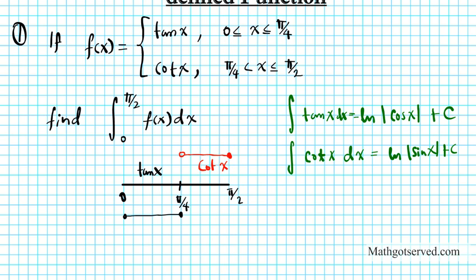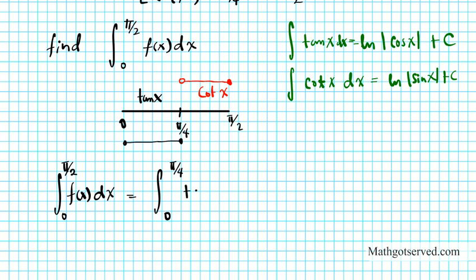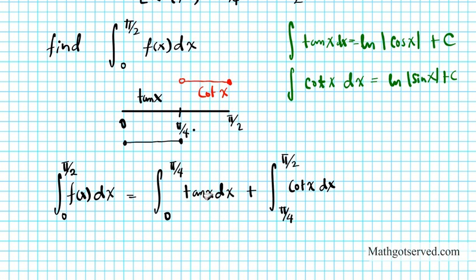So how do we set up this integral? We use the function that's active on each interval. The definite integral of f of x dx from 0 to pi over 2 is simply the integral from 0 to pi over 4 of tan x dx, plus the definite integral of cotangent x dx from pi over 4 to pi over 2. We're going to evaluate this using FTC part 2 to find the total value.